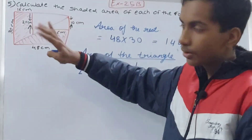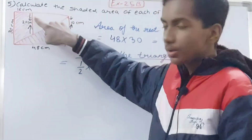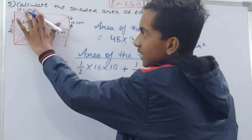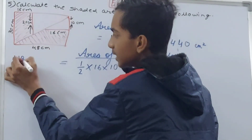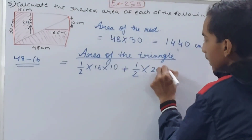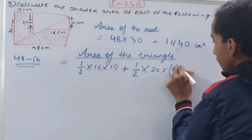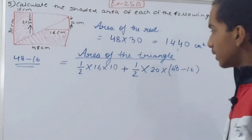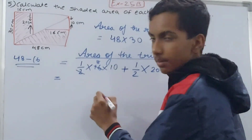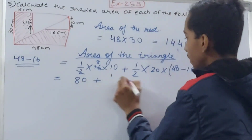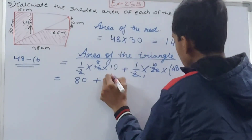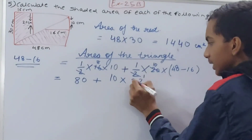For the second triangle, one dimension given is 20 centimeters. We need the base, which we can calculate as 48 minus 16 = 32 centimeters. So the second triangle's area is ½ × 20 × 32. Simplifying: 8 × 10 = 80 for the first triangle, and 10 × 32 = 320 for the second triangle.